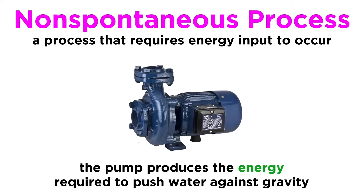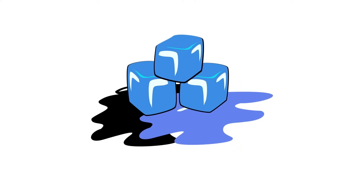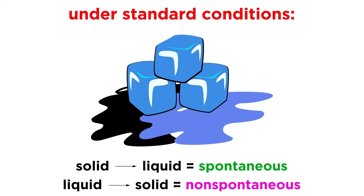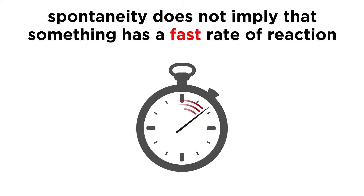We can view phase changes this way, too. Under standard conditions, ice will melt, but liquid water will not freeze. One process is spontaneous, the other is non-spontaneous. We should note that spontaneity has nothing to do with how fast or slow a process is.